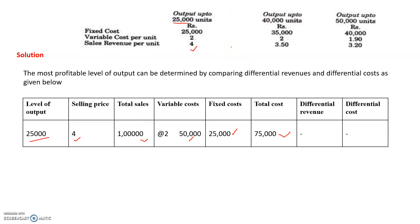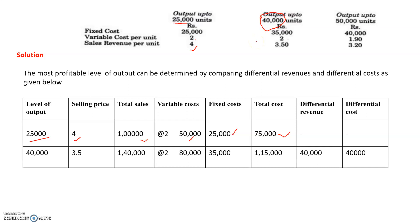If the company switches to producing 15,000 more units at the second level of 40,000 units, the selling price will be 3.5 per unit. Total sales revenue will be 40,000 into 3.5, which is 1 lakh 40,000. Variable cost is 2 rupees per unit, so total variable cost is 40,000 into 2, which is 80,000. Fixed cost is 35,000. Total cost is 80,000 plus 35,000, which is 1 lakh 15,000.